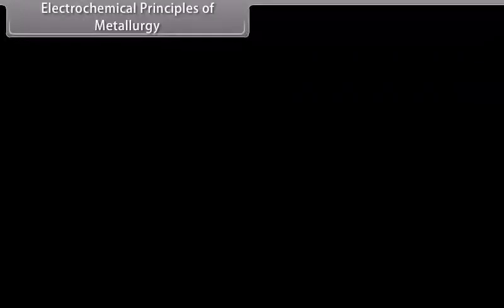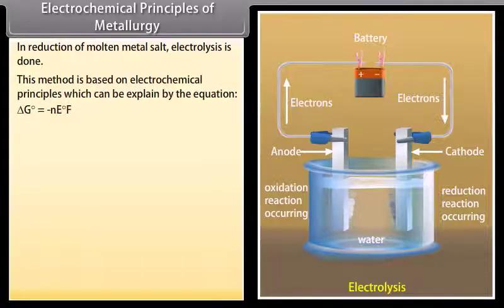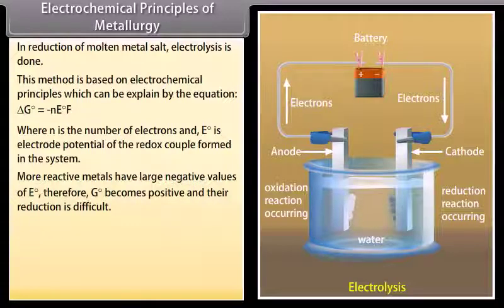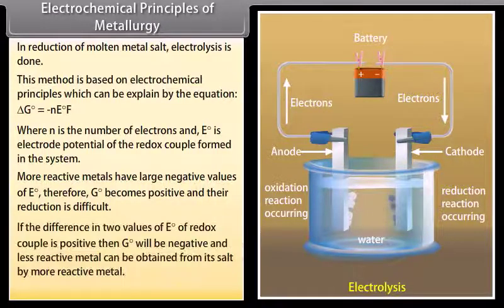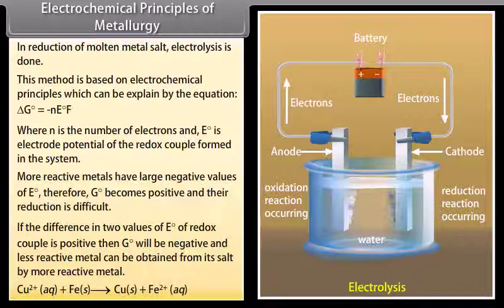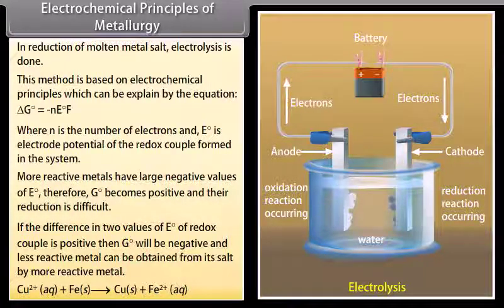Electrochemical principles of metallurgy. In reduction of molten metal salt, electrolysis is done. This method is based on electrochemical principles which can be explained by the equation ΔG° = -nE°F, where n is the number of electrons and E° is electrode potential of the redox couple formed in the system. More reactive metals have large negative values of E°. Therefore, G° becomes positive and their reduction is difficult. If the difference in two values of E° of redox couple is positive, then G° will be negative and less reactive metal can be obtained from its salt by more reactive metal.